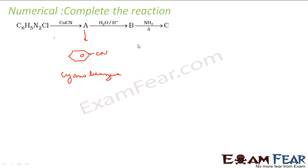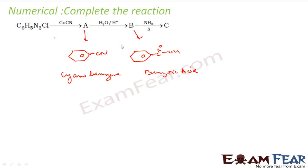Then you do H+ in water — this CN will become COOH, that is benzoic acid. So B is benzoic acid. Then benzoic acid reacts with NH3, and what will happen is you will get CONH2 — that is benzamide. This is what you will get.